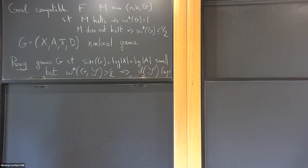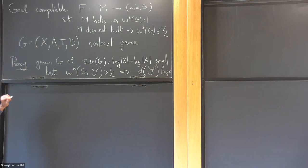Just to remind you: a non-local game is given by a set of questions X, a set of answers A — these are finite sets — then there's a distribution pi which is a distribution on the Cartesian product of X with itself, and then there's a decision function d that goes from X cross X cross A cross A to zero-one. This tells you if a pair of answers is valid for a given pair of questions.